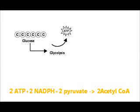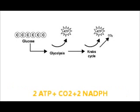The pyruvate molecules are then converted into 2 acetyl-CoA molecules, which proceed into the Krebs cycle. The byproducts of the Krebs cycle are 2 more ATP, 2 more NADPH, and CO2.